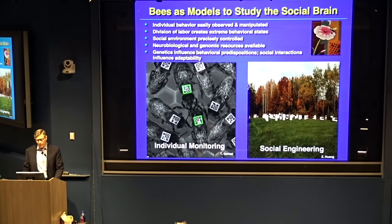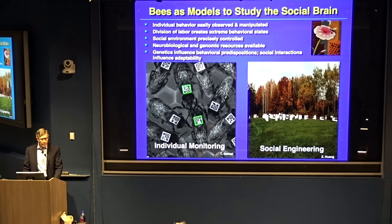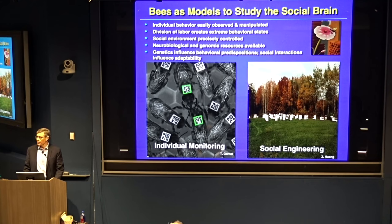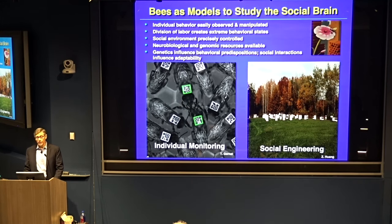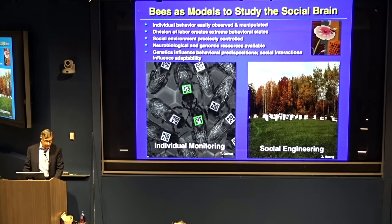We'll be focusing on honeybees, so let me give a quick introduction to key features that commend them for these studies. First, bees are large enough that we can study them as individuals. We use barcodes for automated monitoring of individually identifiable bees. It's also possible to manipulate the social behavior of honeybees. We stand on the shoulders of thousands of years of beekeepers who observed honeybees because honeybees produced the first sweetener known to humankind and the first alcoholic beverage.